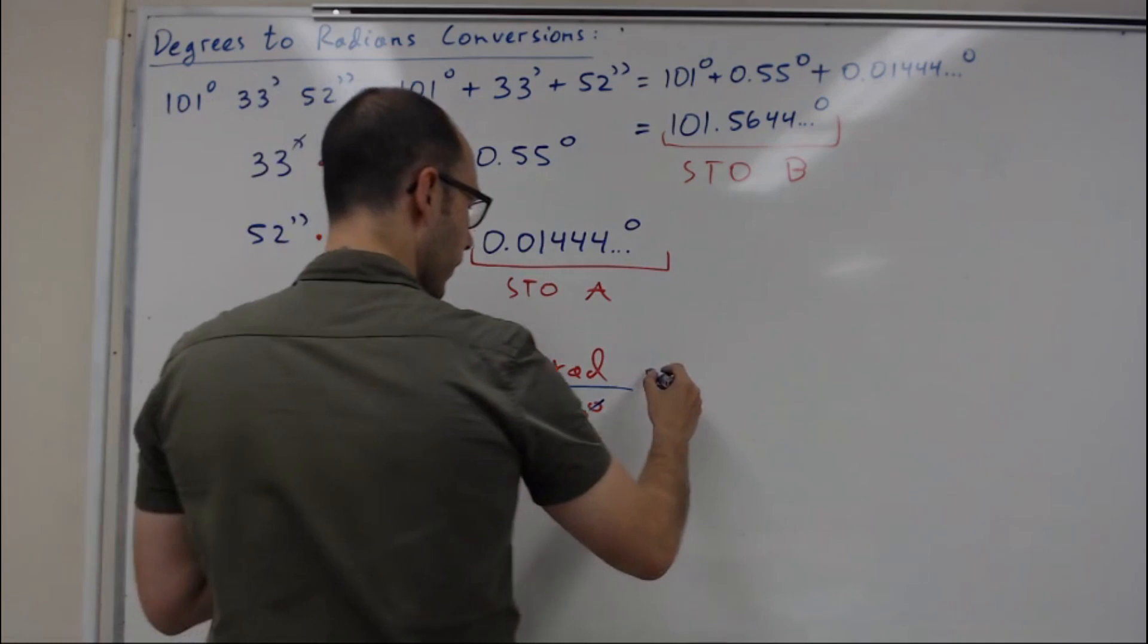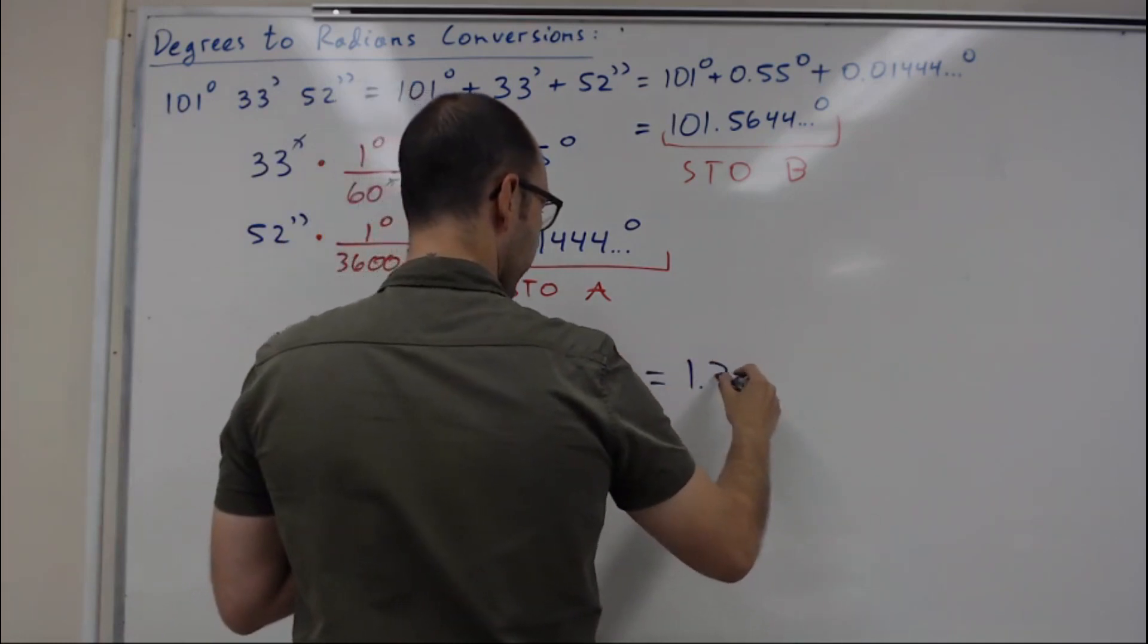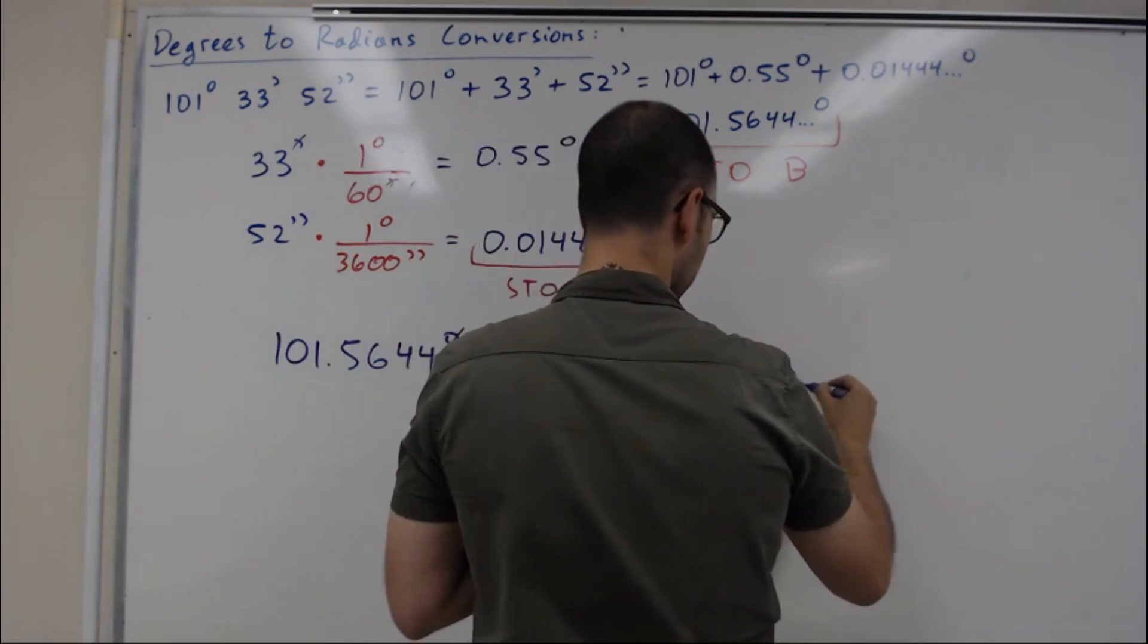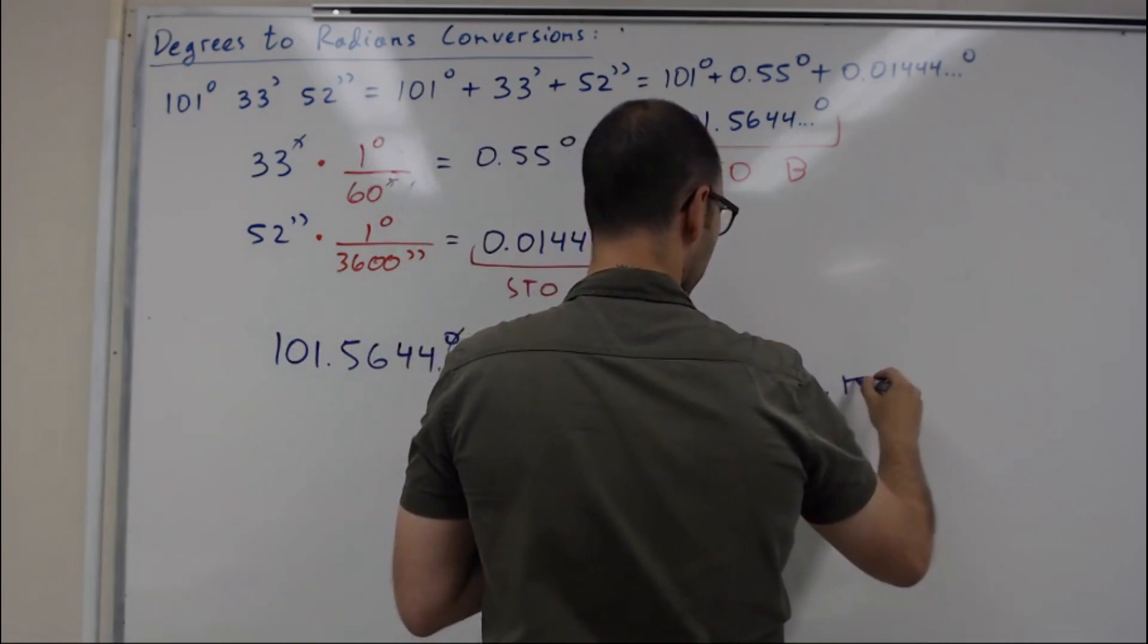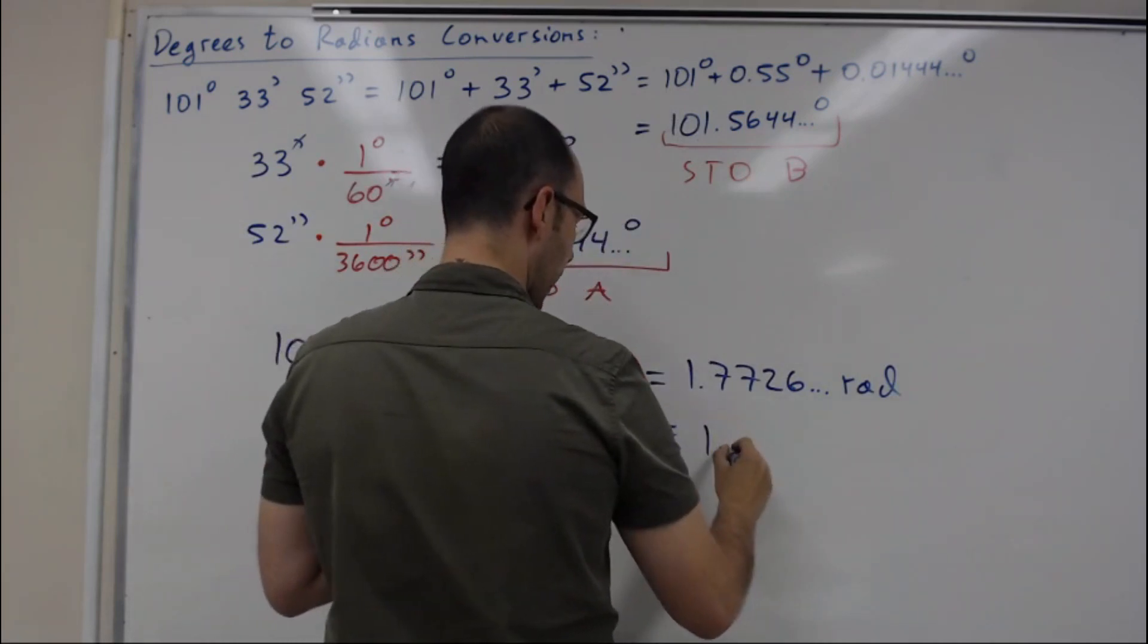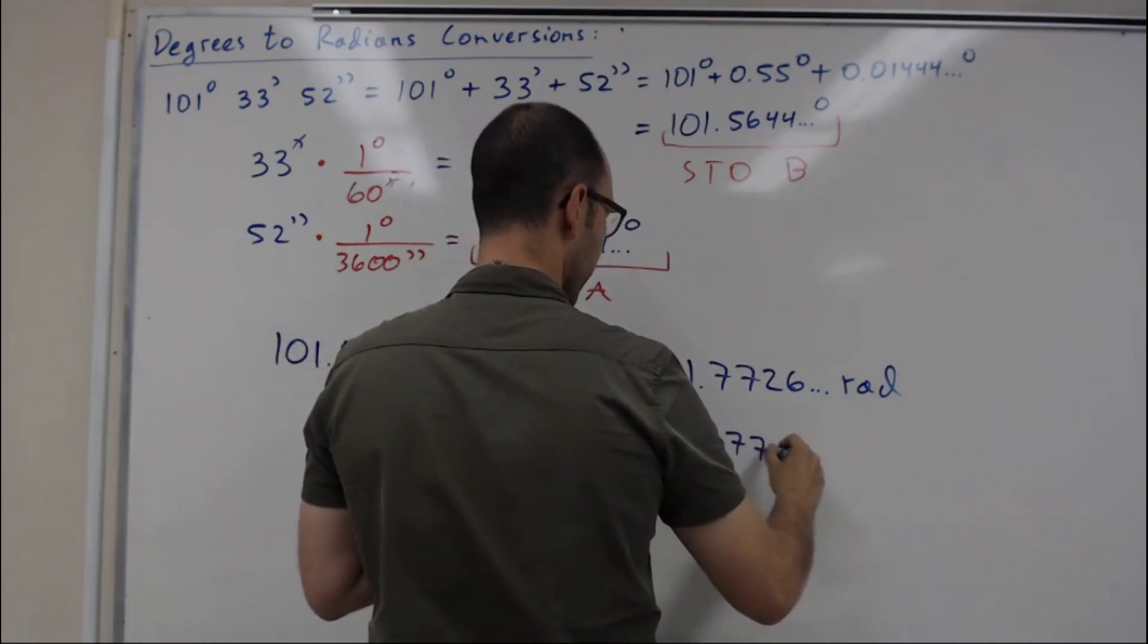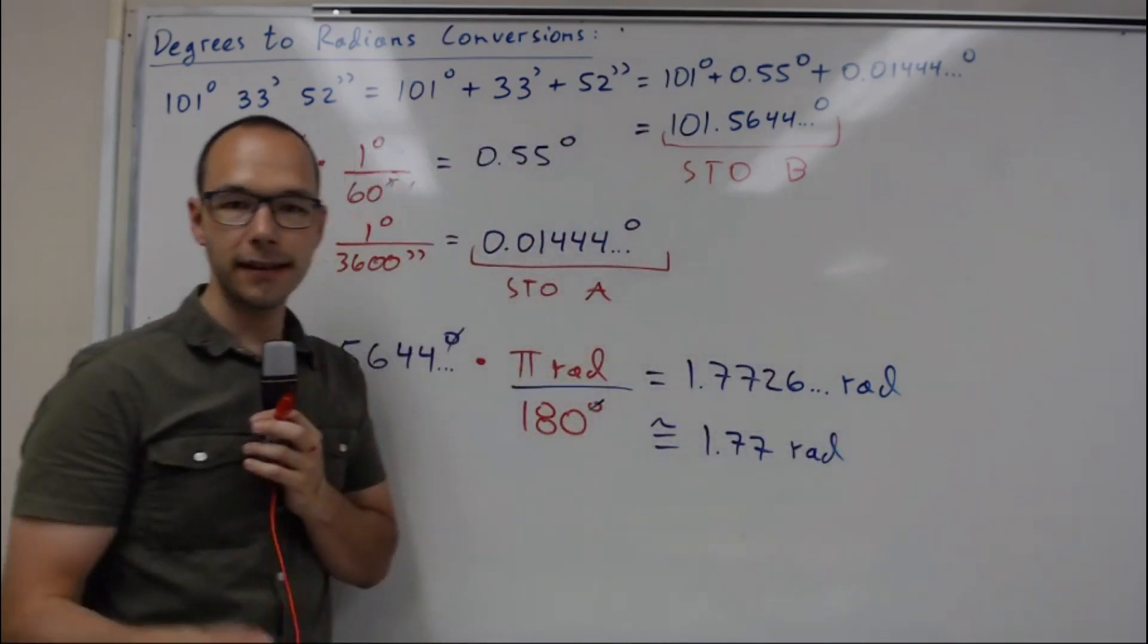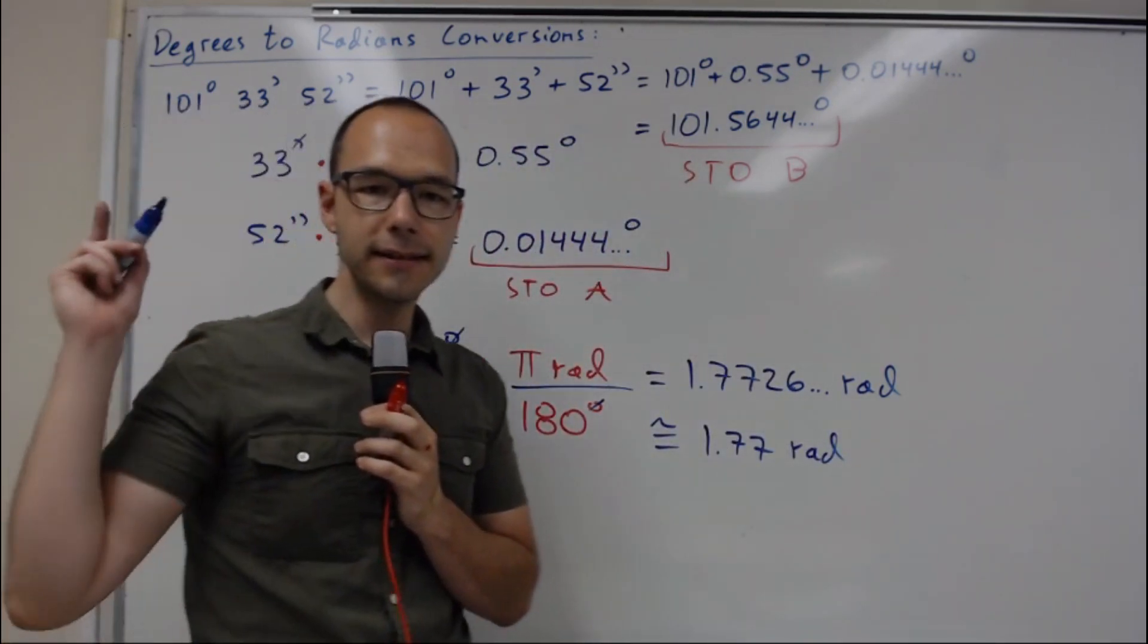And this will give you 1.7726 radians that you can round to two decimals as 1.77 radians. So that's it. Thanks for watching and see you in the next video.